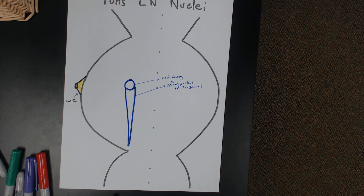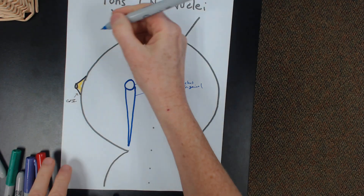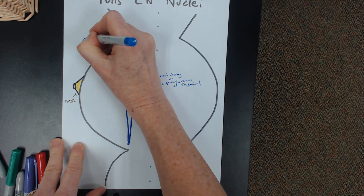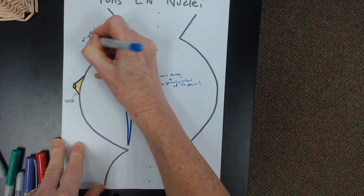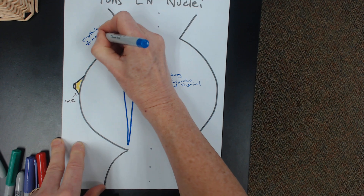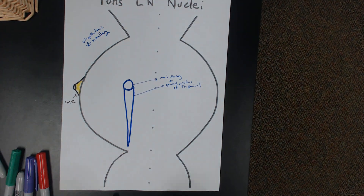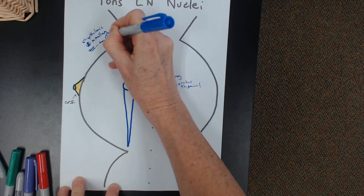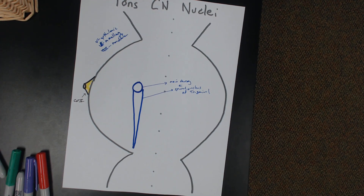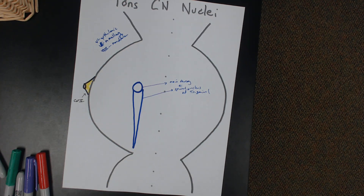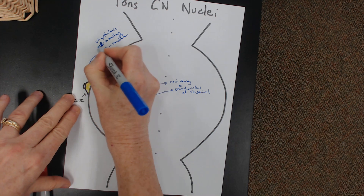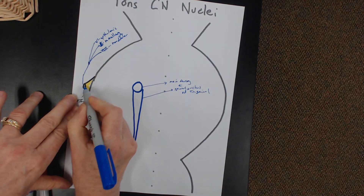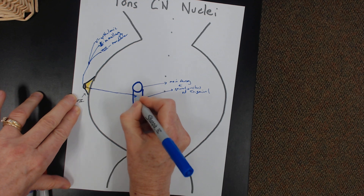Three different divisions: V1 is ophthalmic, V2 is maxillary, and V3 is mandibular. Information from all three divisions is going to come in as part of cranial nerve number five. Afferent information comes in, travels through cranial nerve number five, and then synapses here in either the main sensory or the spinal nucleus of trigeminal.